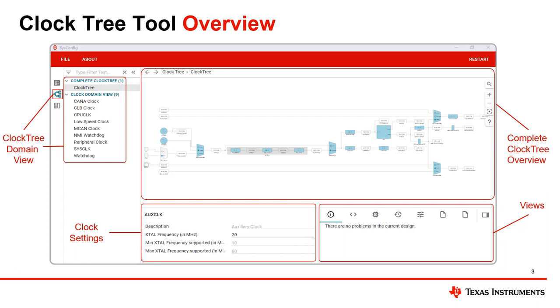Now say we want to modify the system bus clock to specifically achieve a more stable function of the MCAN clock. As the current view shows us every part of the ClockTree, we can simply select the MCAN clock domain to take a closer look.